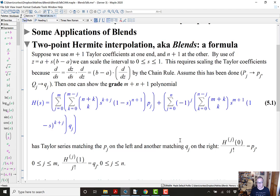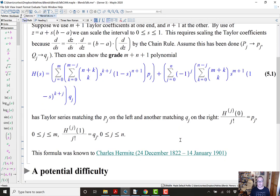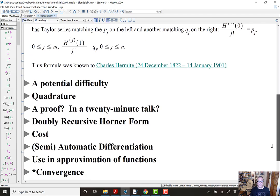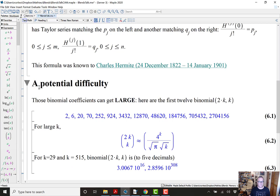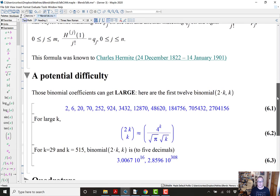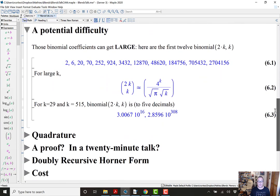So, this definite polynomial, which we just write down analytically, turns out to have Taylor series matching the pj on the left and another Taylor series matching the qj on the right. So, the jth derivative evaluated at 0 divided by j factorial is going to be pj for 0 ≤ j ≤ m. And similarly, you'll match the qj's by evaluating the derivative of s equals 1. So, this formula was known to Charles Hermite. It's in his cours de analyse on page 4.